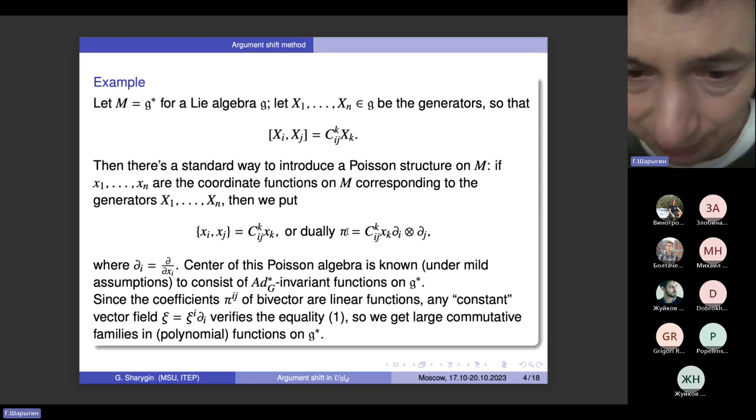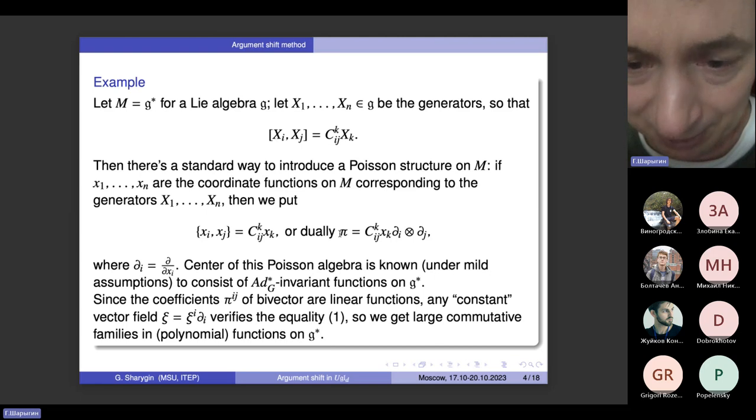The Poisson structure is given by identifying linear functions on G-star with elements of G, so that the Lie bracket turns into the Poisson bracket on coordinates. Or dually, if we take the point of view of bivectors, pi is equal to this combination of partial derivatives. As you can see, coefficients at every pair of partial derivatives are linear, and that means that if you take any constant vector field psi and apply it to pi, the first time you get something non-zero, which you should obtain just by replacing x_k by psi_k in this formula, but when you apply it second time, you obtain zero, nothing.